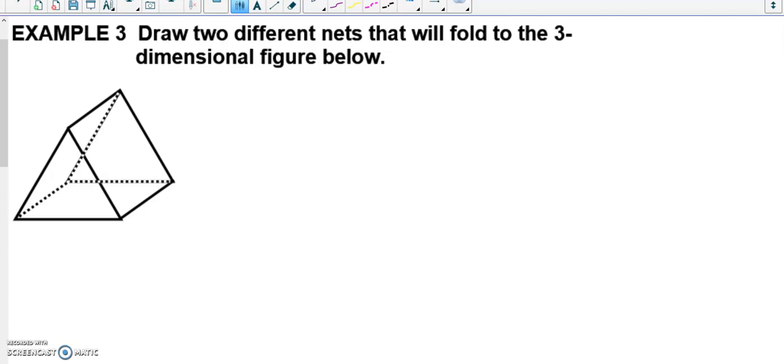In this example, we will be drawing two different nets that can make this three-dimensional figure below. This three-dimensional figure is a triangular prism.